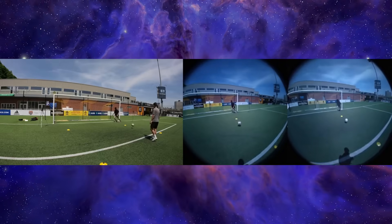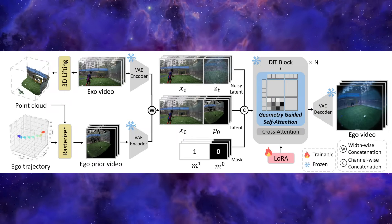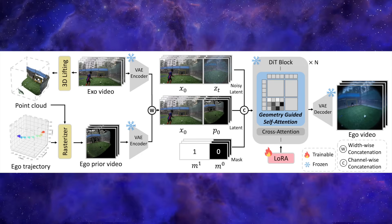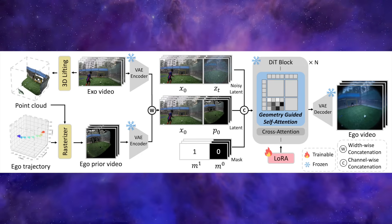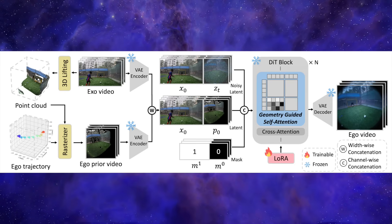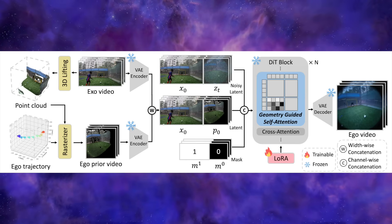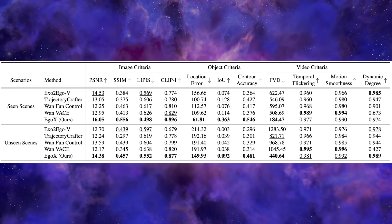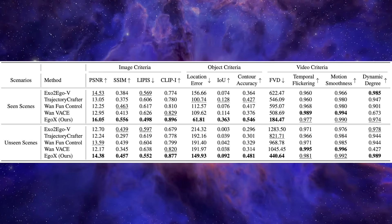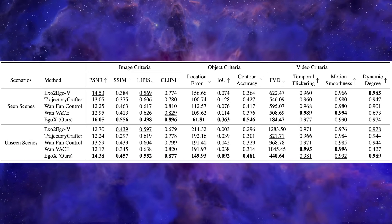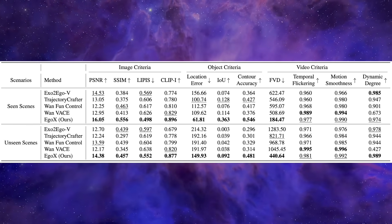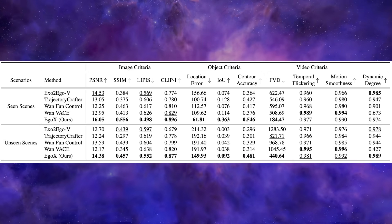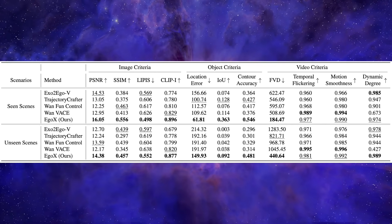So how does it pull this off? EgoX first lifts the 2D video into a 3D point cloud to understand the scene's geometry, then creates a rough egocentric prior — basically a draft of the POV. The magic happens with geometry-guided self-attention, which aligns the visual features from the original third-person video with the new 3D perspective, ensuring texture and details land in the right place. It's all built on top of the powerful WAN 2.1 video diffusion model. On the FVD metric — where lower is better — EgoX scored 1.847 while the closest competitor was at 622. It also secured the highest scores in PSNR and SSIM, proving it reconstructs the scene much more accurately than anything else out there.